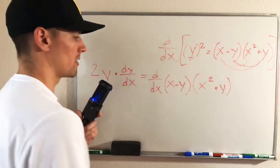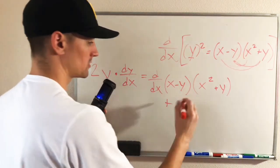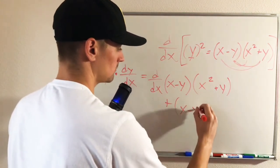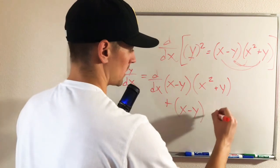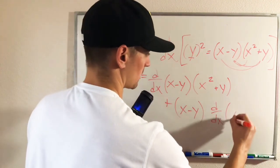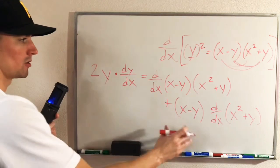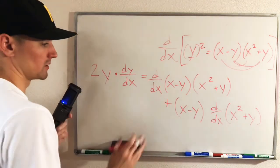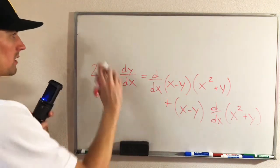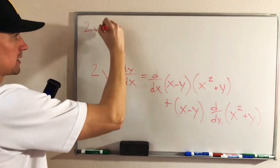And then plus our first function times the derivative of our second function. So let's kind of break down these pieces now. We'll keep the left side of our equation the same, so it'll just be 2y dy/dx.